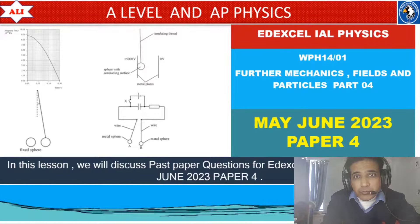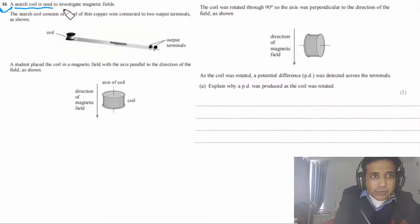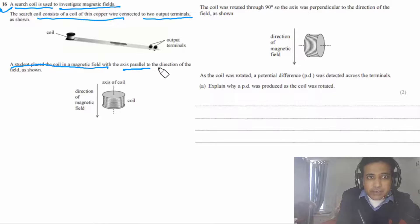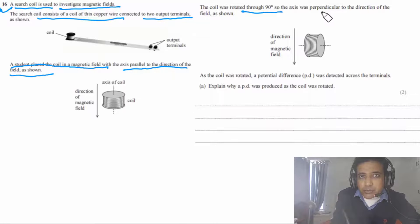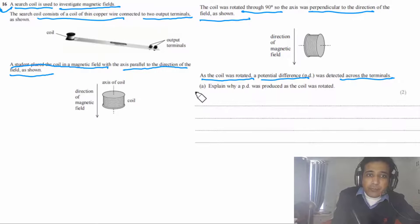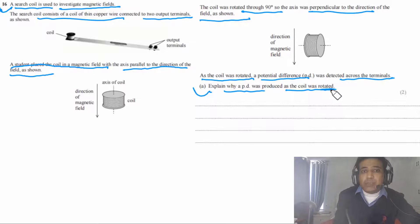Question 16: a search coil is used to investigate magnetic fields — a coil of thin copper wire connected to two output terminals. The coil is placed with its axis parallel to the magnetic field, then rotated 90° so the axis is perpendicular to the field. A potential difference was detected across the terminals as the coil was rotated. Part a: explain why a PD was produced.